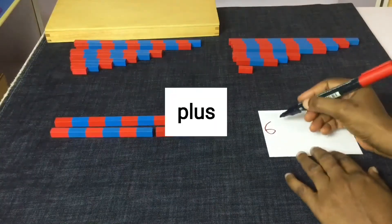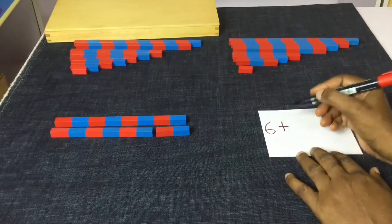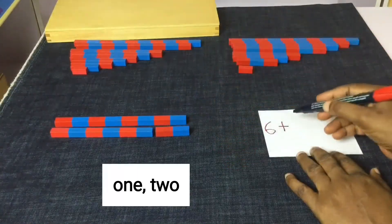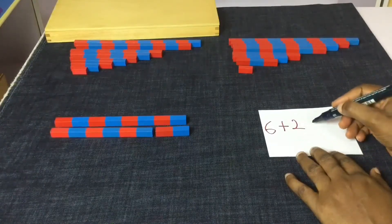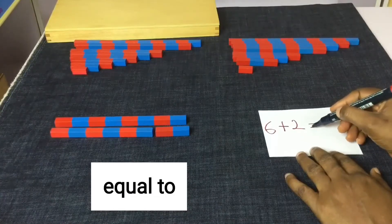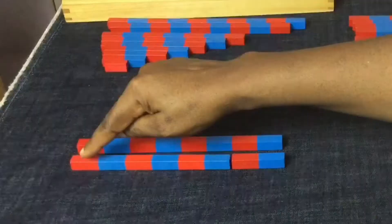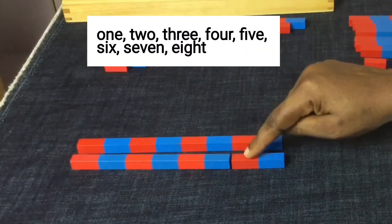6 plus 2 equal to 1, 2, 3, 4, 5, 6, 7, 8.